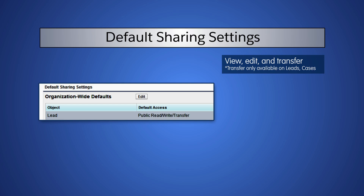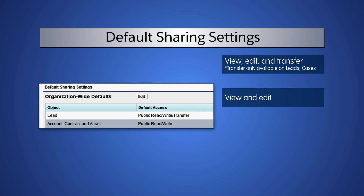You can make records of an object public read-write. Here, users can view and edit accounts, contracts, and assets they don't own, but they cannot transfer ownership.